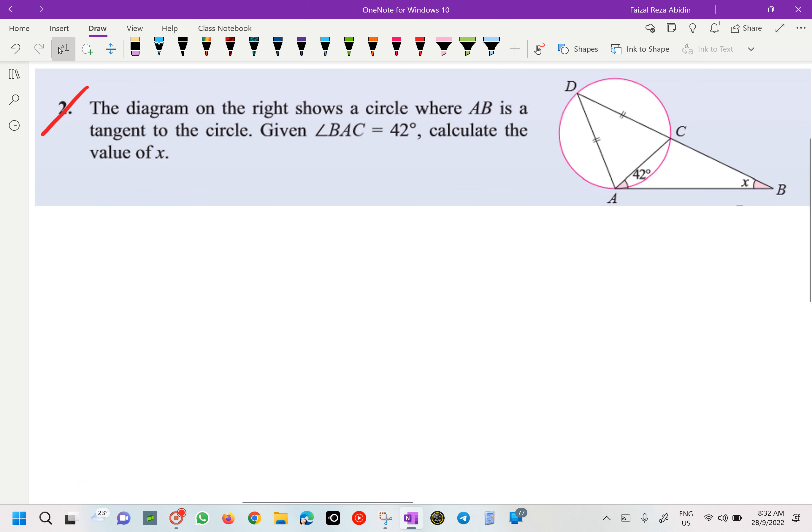The diagram on the right shows a circle where AB is a tangent to the circle. Given the angle BAC is 42 degrees, calculate the value of x.